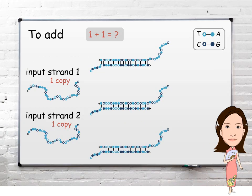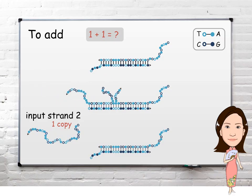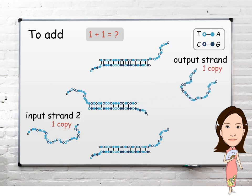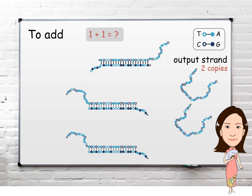To add 1 and 1, we start with one copy of input strand 1 and one copy of input strand 2. Input strand 1 releases one copy of the output strand, and input strand 2 releases another copy of the output strand, which indicates that 1 plus 1 equals 2.